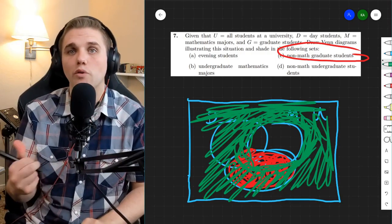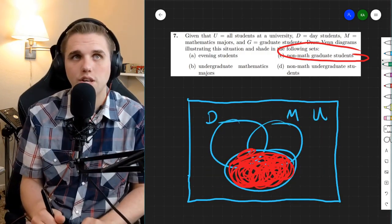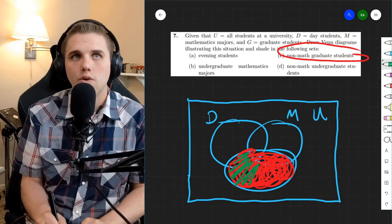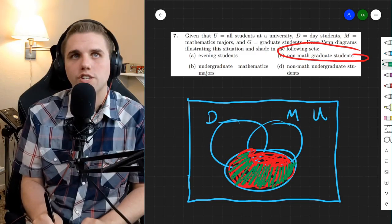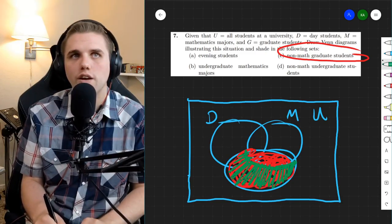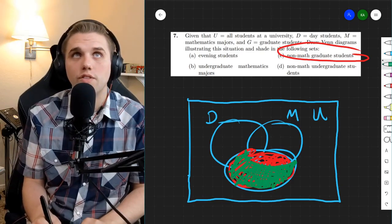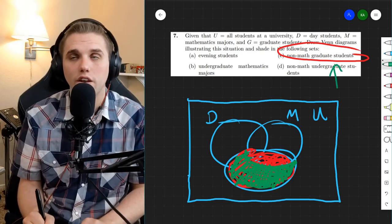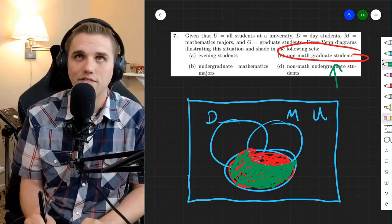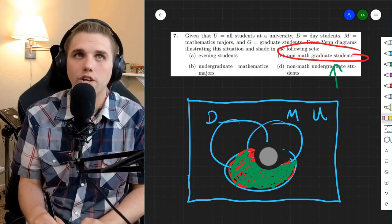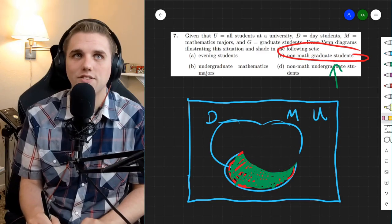the intersection between the two, because they need to be both non-math and graduate students. So for that reason, the intersection would be just this green region right here. And so that green region would be non-math graduate students. We would have to cut away this red region because we don't want math students.